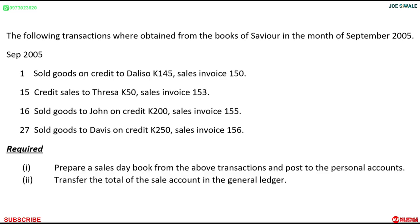We continue looking at the sales day book, and today we're going to look at some examples. We have this example: the following transactions were obtained from the books of Savior in the month of September 2005.